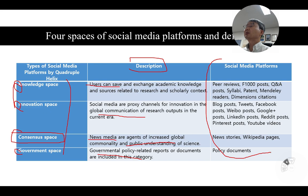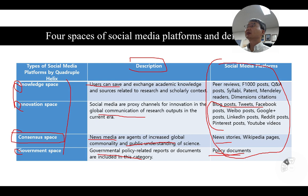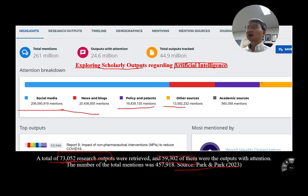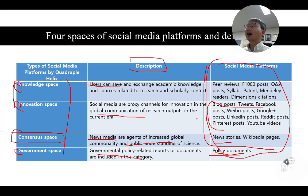Specific examples belonging to the quadruple helix space: tweet, Facebook, LinkedIn belong to the innovation space; news stories and Wikipedia belong to the consensus space; policy documents published by national government, federal government, or intergovernment agencies such as WHO belong to the government space. 50,000 out of 70,000 research outputs in artificial intelligence were mentioned and disseminated by helix space.